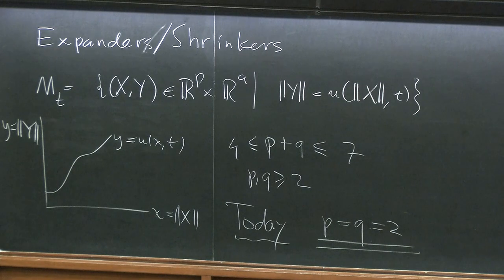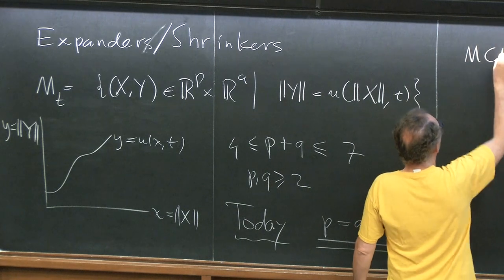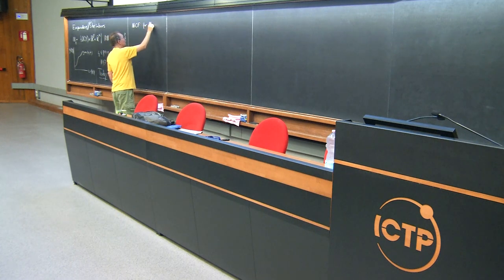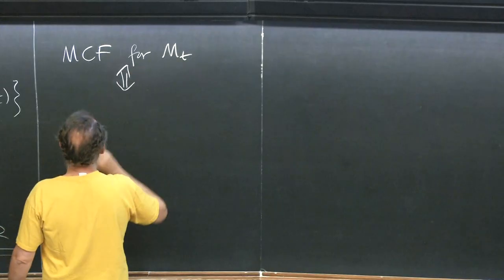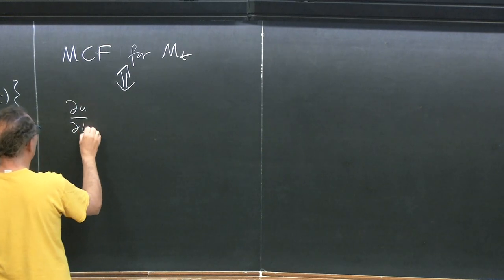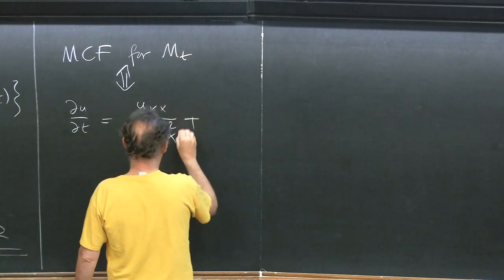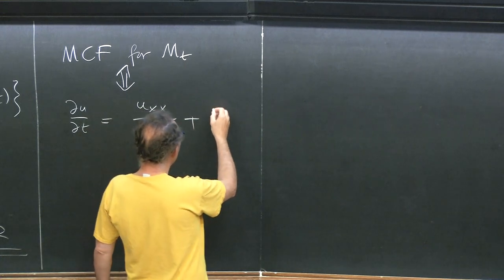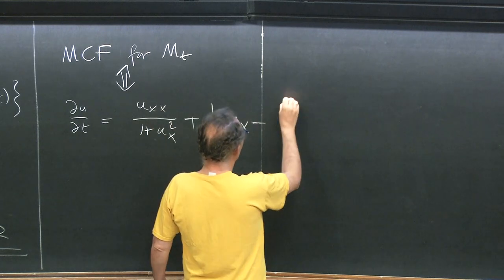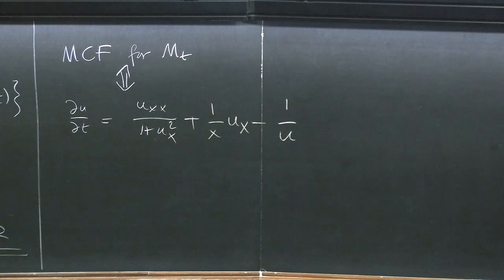That leads to the following PDE. Mean curvature flow for M_t is equivalent to an equation with always this first term, then p minus 1, so that's 1 over x times u_x, minus Q minus 1, that's 1 over u. Today is about that one particular PDE.